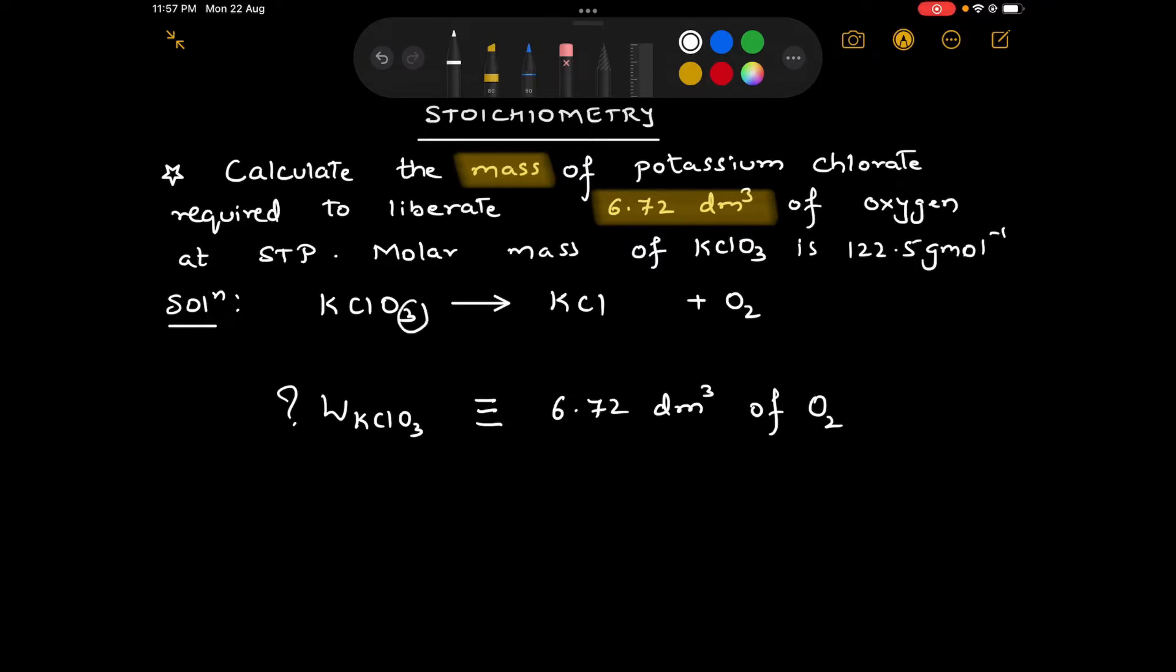Now the next step is balancing. If here is a 3, let us have a coefficient of 3 before oxygen gas. Since here it is a 2, let us have a coefficient 2 before KClO3. In this process KCl is getting affected, so let us balance KCl by putting a 2.